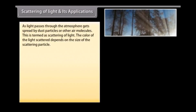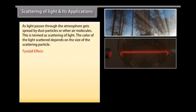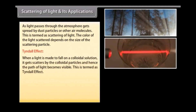As light passes through the atmosphere, it gets spread by dust particles or other air molecules — this is termed scattering of light. The color of light scattered depends on the size of the scattering particle. The Tyndall effect occurs when light falls on a colloidal solution and gets scattered by the colloidal particles, making the path of light visible.